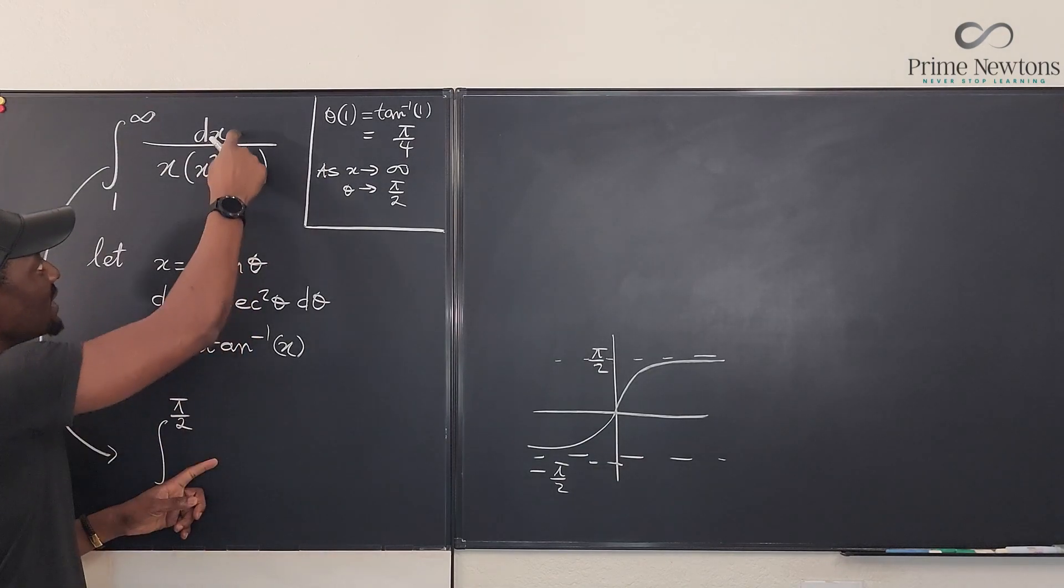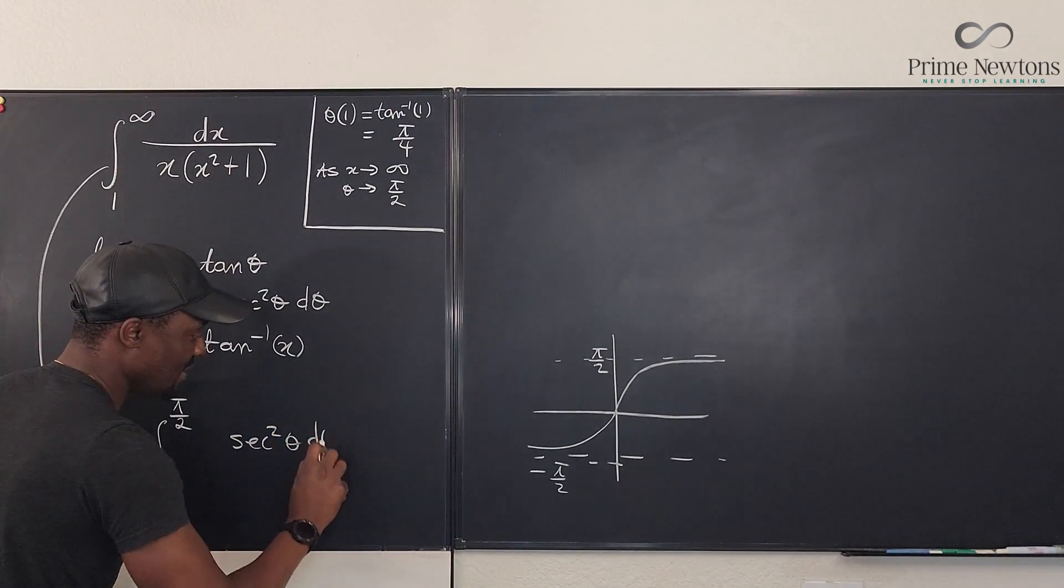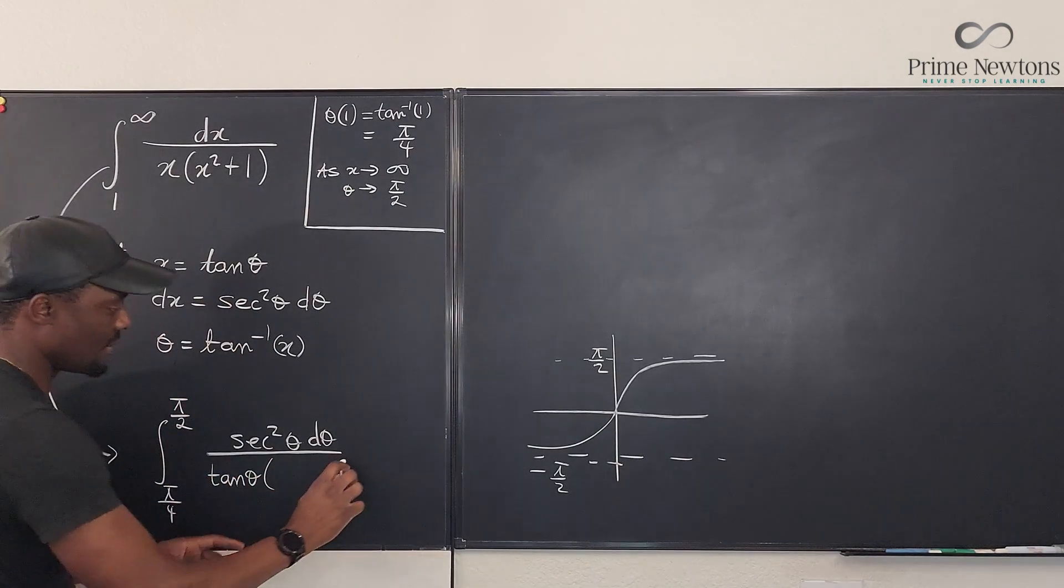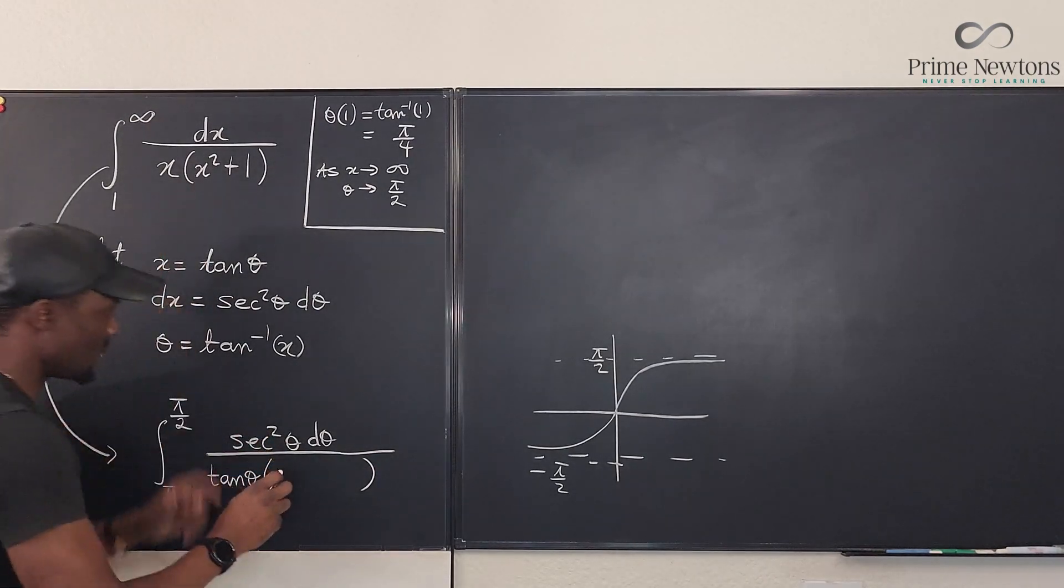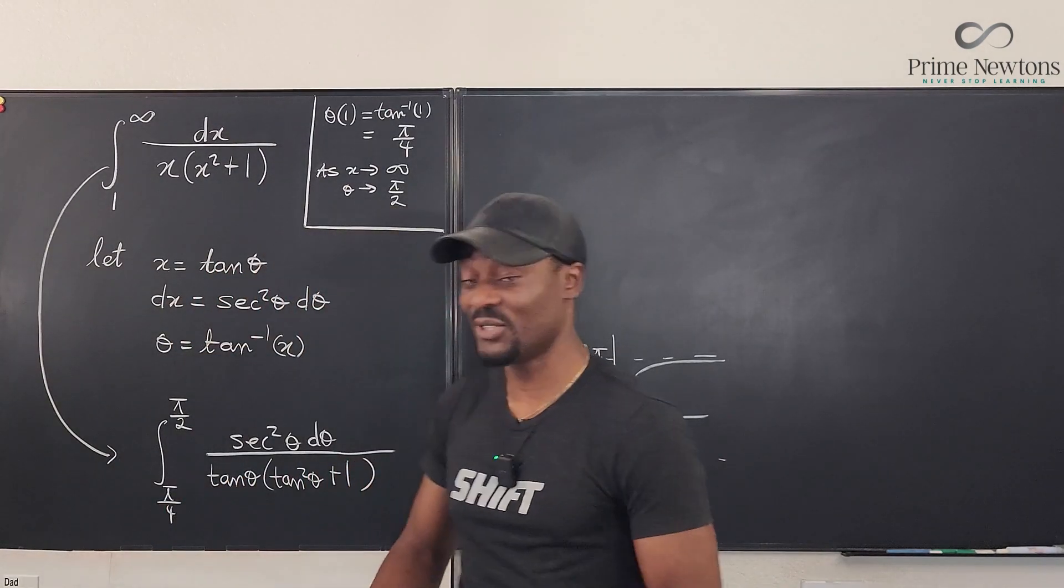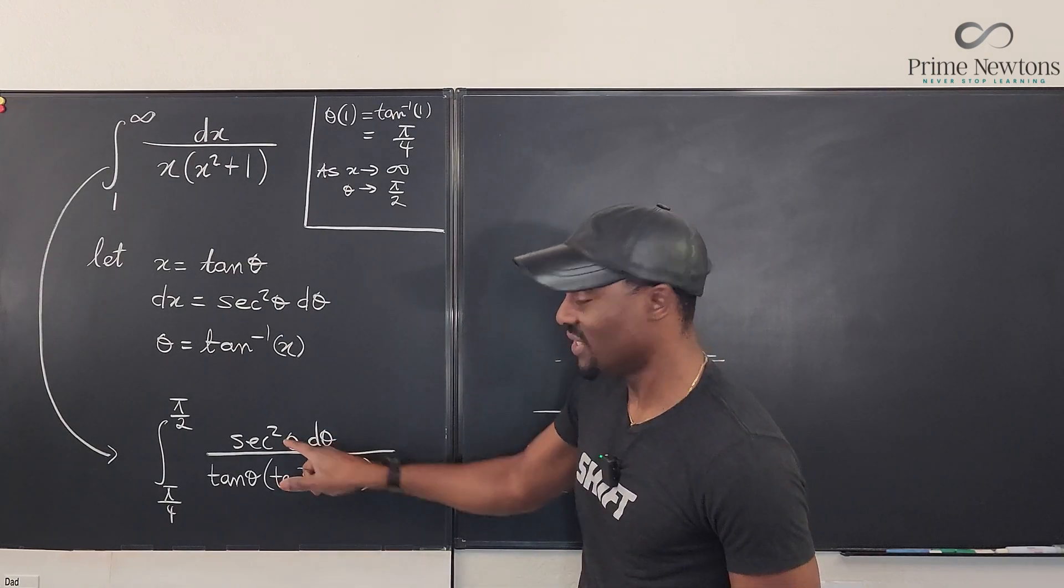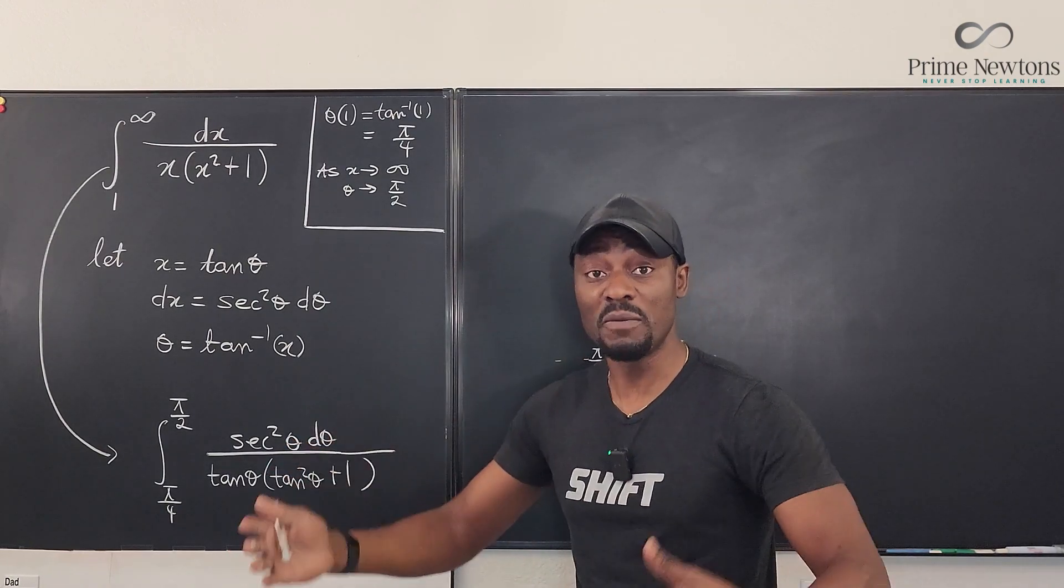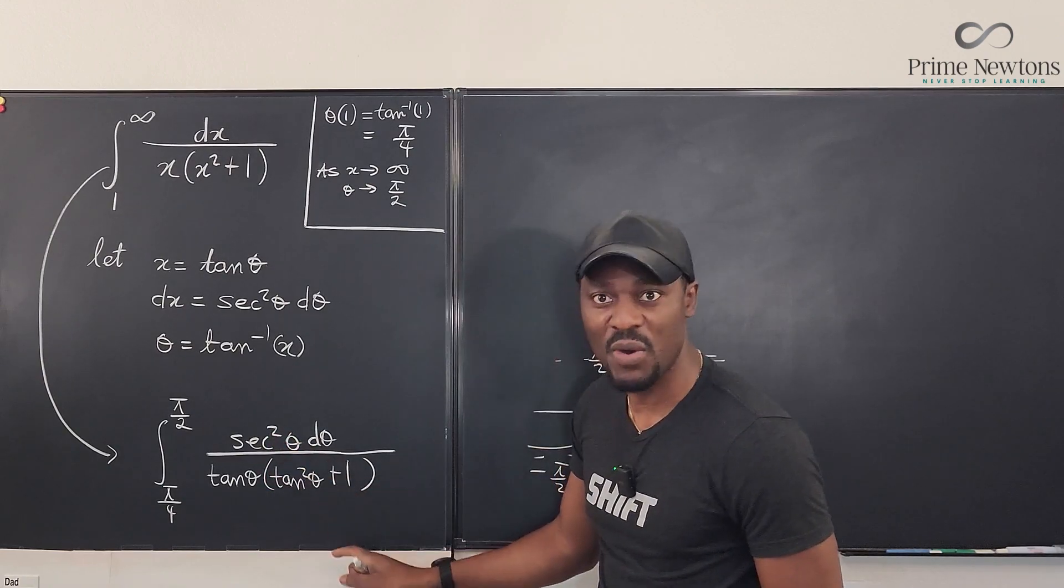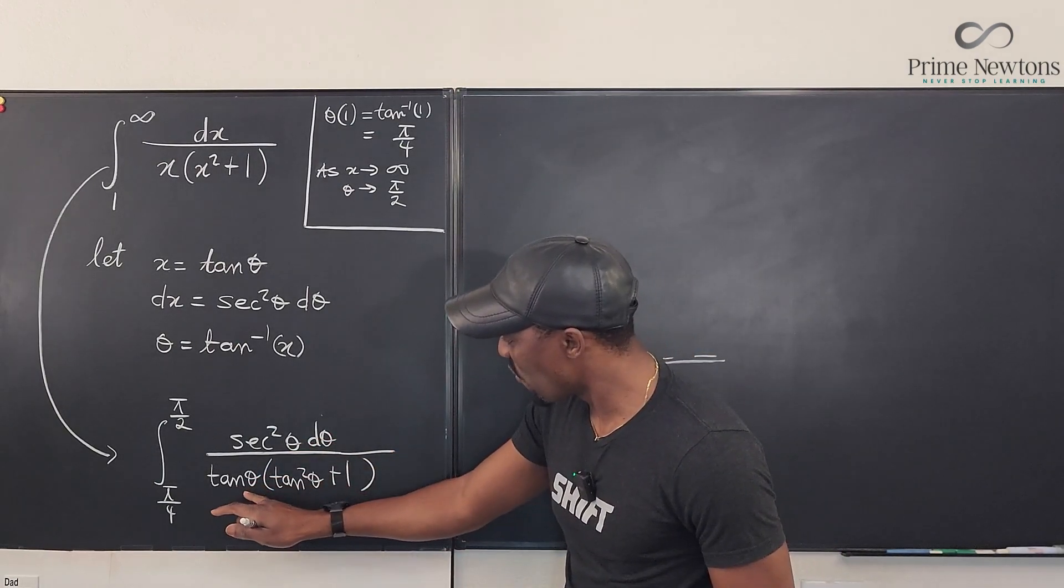And then, we can write our expression. What is dx? We already said dx is secant squared θ dθ. And under, we said x is tan θ, so we're going to have tan θ. And in here, we're going to have tan² θ + 1. Now, how is this easy? Well, this is super easy, because as a good trig student, you must know that tan² θ + 1 is secant squared θ. Just as you know that 1 - sin² θ is cos² θ. This is the same as this. We can cancel them out. And all you have left is just dθ over tan θ.